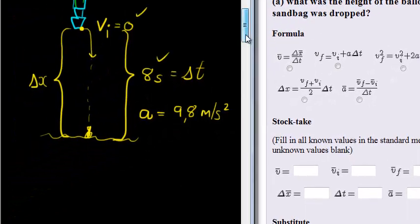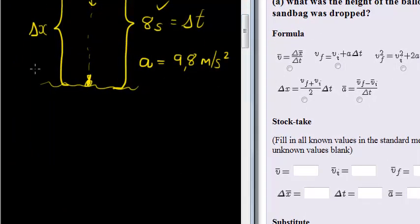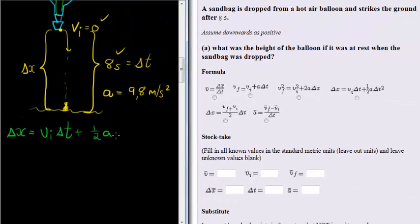So if we write that one down, we have delta X is equal to initial velocity times delta T plus one half times a times delta T squared.